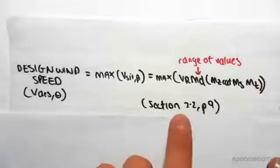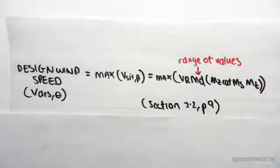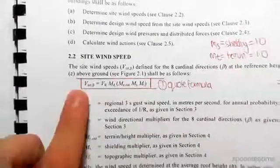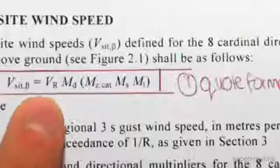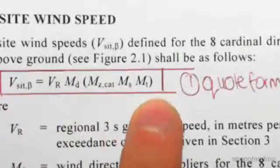That is from section 2.2 on page 9. If I show you where that's from, I've taken that from the site wind speed: v site comma beta equals VR MD MZ,cat MS MT.